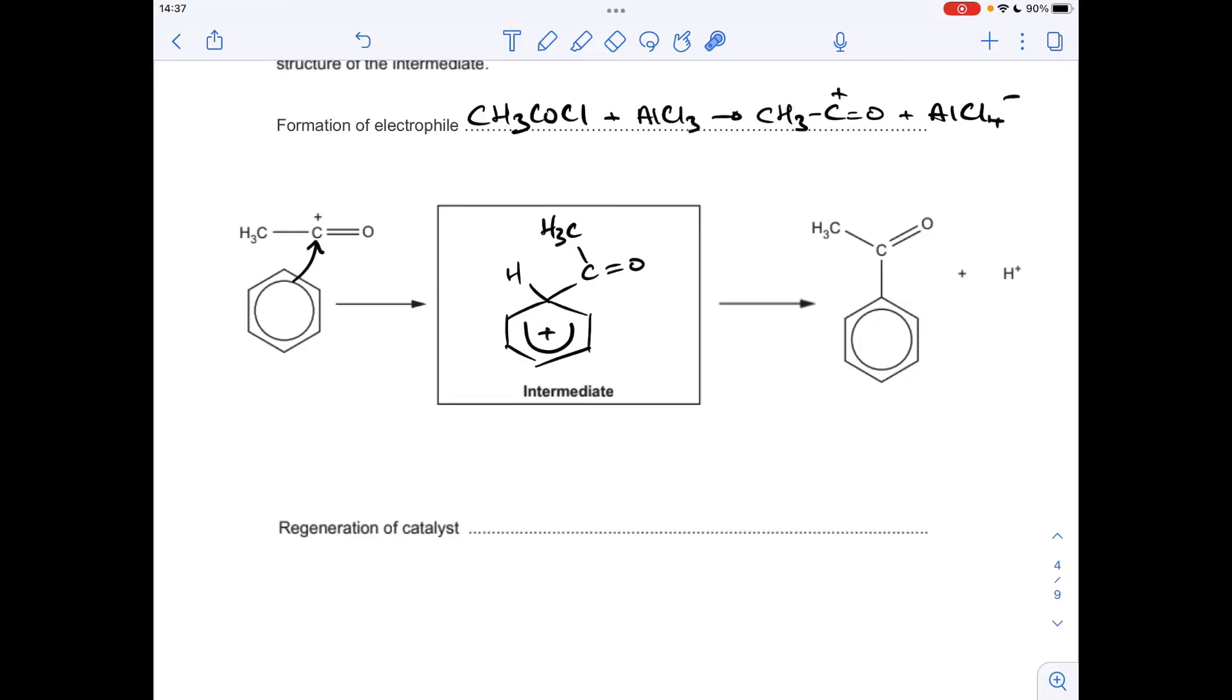So the next thing we need to do is go from the intermediate to the products, the organic product and the H plus ion. And the way that happens is a pair of electrons from that CH bond go back in to reform the pi electron cloud. So we do that by drawing a curly arrow from the bond to the middle of that benzene ring there.